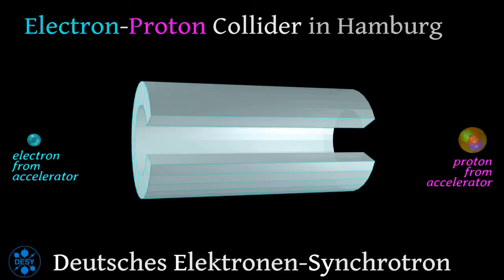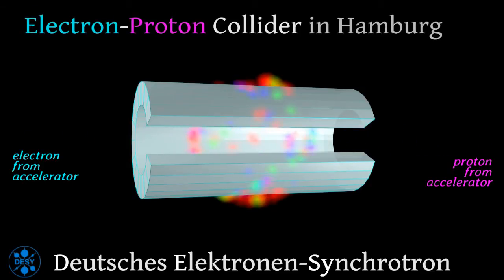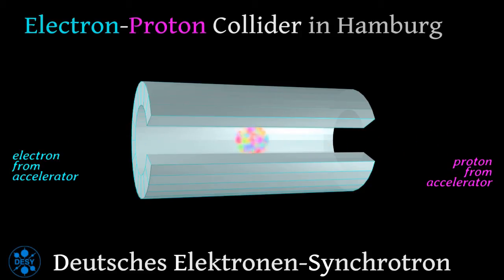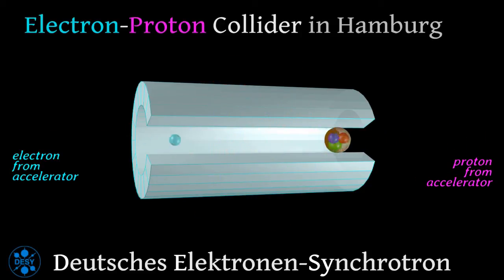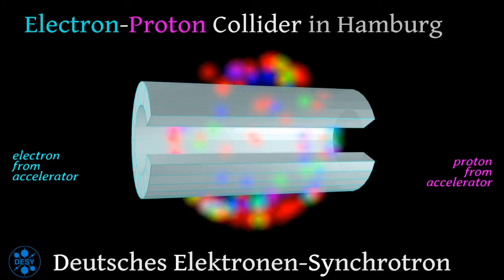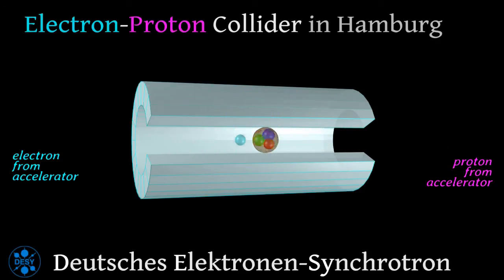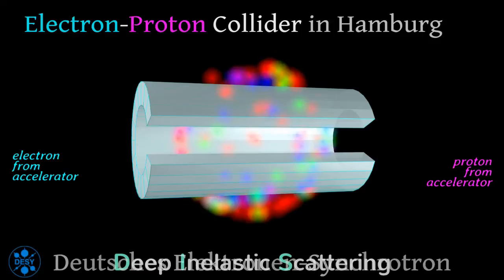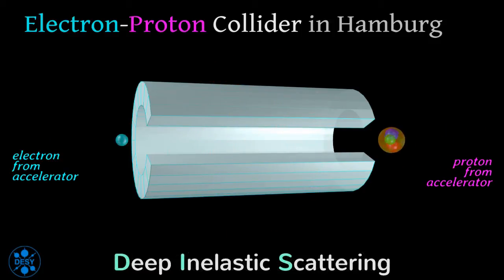At four places of the ring, the electron and the proton beam could be brought to collision. In the process, electrons are scattered at the constituents of the protons — the partons, or quarks and gluons. The collision between the electron and the proton destroys the initial proton and produces a lot of subatomic particles. Such a process, which was studied at DESY, is usually called deep inelastic scattering.